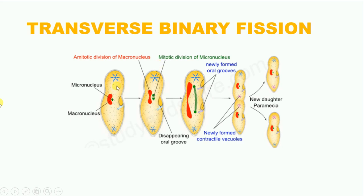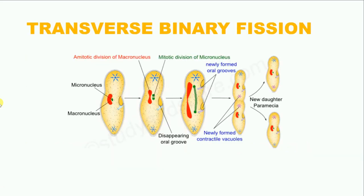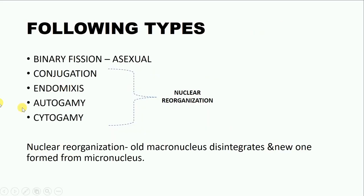Now continuous binary fission can lead to a reduction in the vigour of the organism. And so as to re-attain its lost vigour and rejuvenate itself, the paramecium undergoes a process known as nuclear reorganisation. In nuclear reorganisation, the old macronucleus disintegrates and a new one is formed from the micronucleus. We know the micronucleus is the reproductive nucleus — it can give rise to the macronucleus. This process of nuclear reorganisation can take place through four methods: conjugation, endomyxis, autogamy, and cytogamy. We are going to look at each one of them in detail.